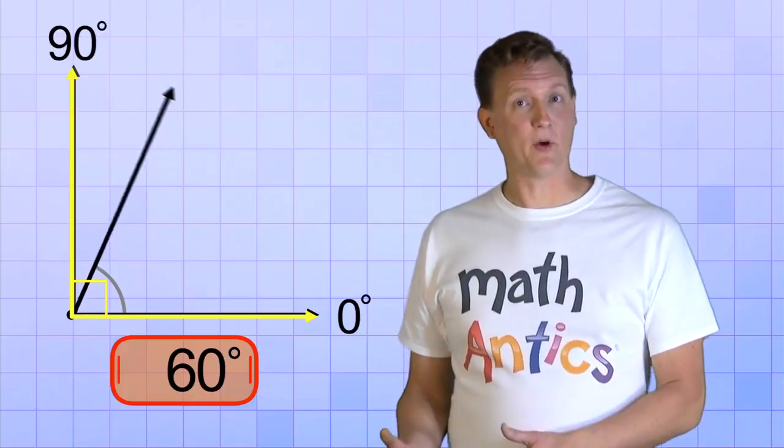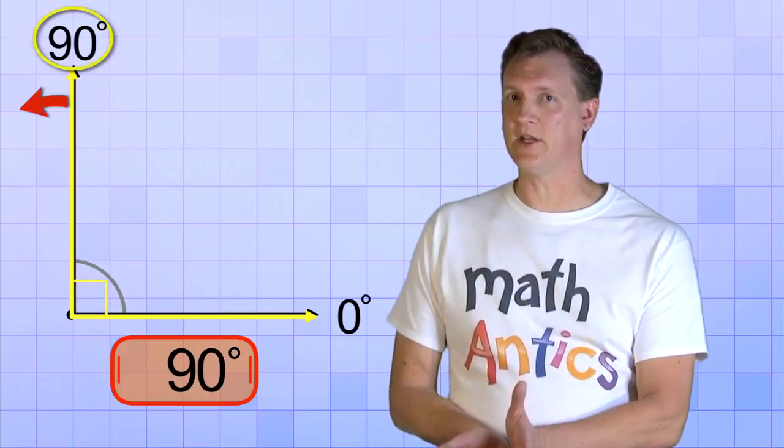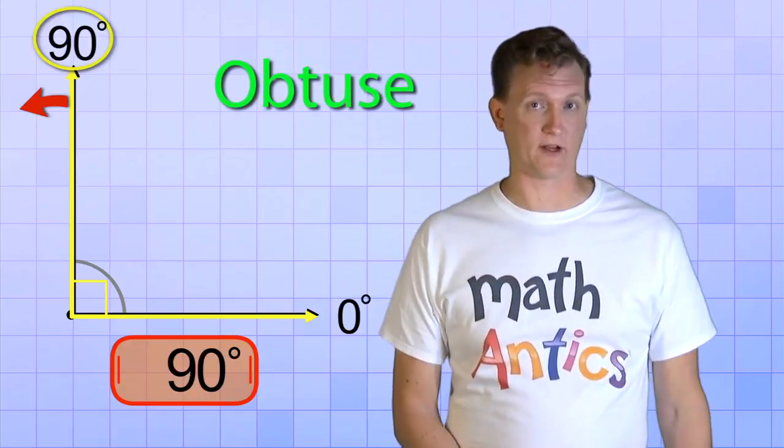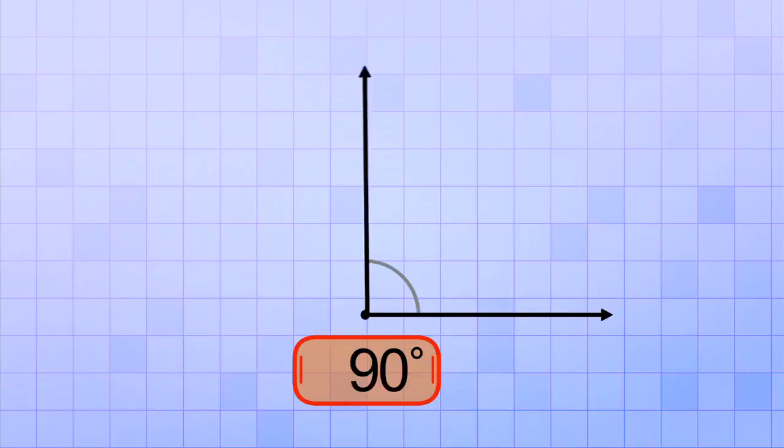But, if we keep on rotating our ray past 90 degrees, we'll start forming obtuse angles because they're greater than a right angle. Ready? Here we go! 100 degrees, 110, 120, 130, 140, 150, 160, 170, and 180.